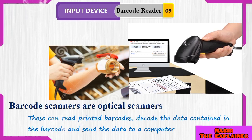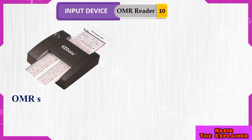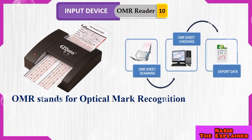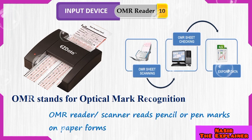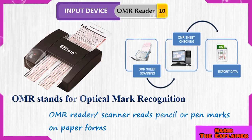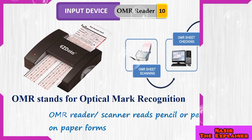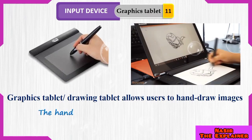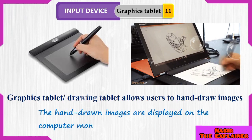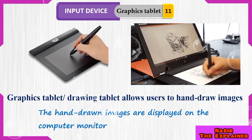OMR stands for Optical Mark Reader. These are sensitive to the marks of a pen or pencil and are used in different institutions to check the answer sheets of students, such as in entry tests and other exams. Graphic tablets are used to capture hand drawings, which are then sent to the computer for use in different graphical applications.